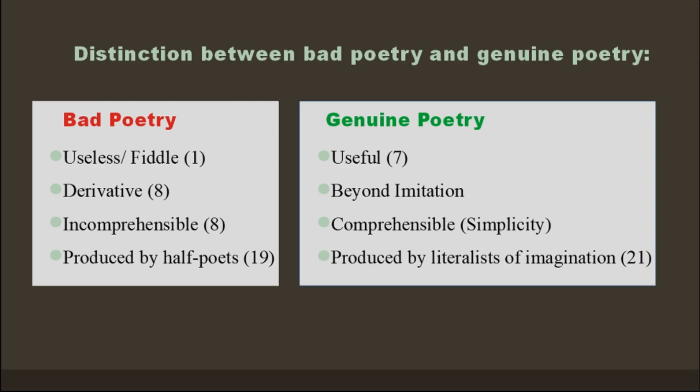The point that Marianne Moore is trying to come across in this poem is the differentiation or distinction between bad poetry and genuine poetry. She states at the beginning that she dislikes poetry, but in fact what she's really trying to say is that she does not like bad poetry — she likes genuine poetry. Bad poetry for Marianne Moore is useless or a 'fiddle.' In the very first line she says there are things that are important beyond all this fiddle. Fiddle here means something nonsensical, meaningless — and that is the quality of bad poetry.